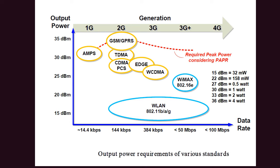As we move forward from 2G to 3G to 4G and then to 5G, the data rate keeps increasing — from 14.4 kbps to 384 kbps and then into the megabits-per-second range. With respect to power amplifier design, the output power requirement lies in the range of 30 dBm ± 3 dBm in most cases, except for WLAN and WiMAX. For GSM it is around 33 dBm, CDMA around 27 dBm, and WCDMA similarly.